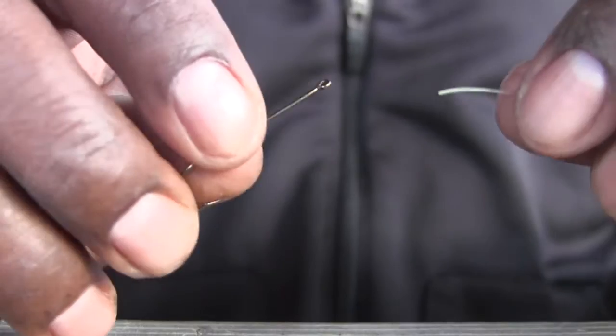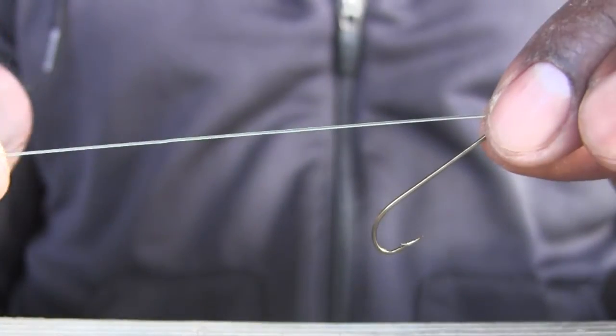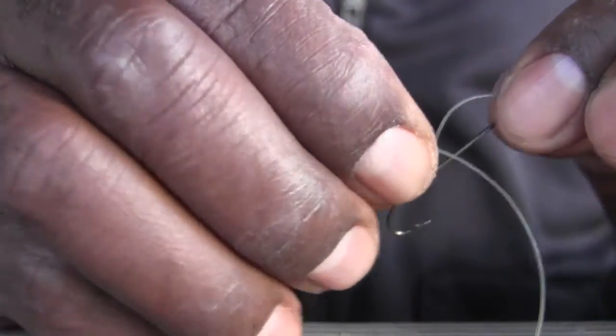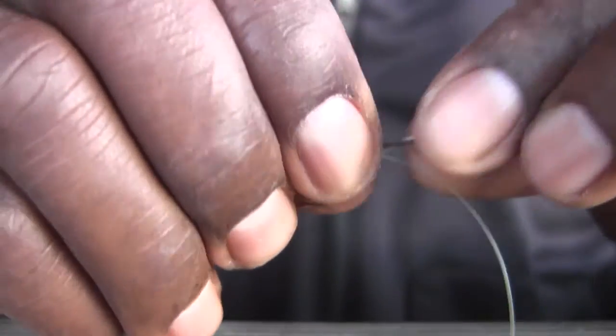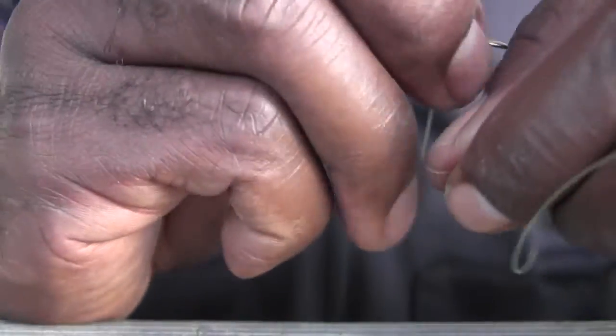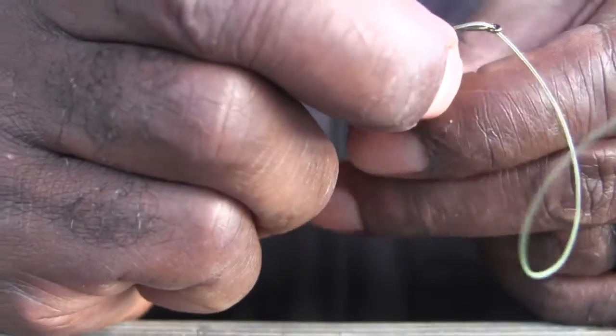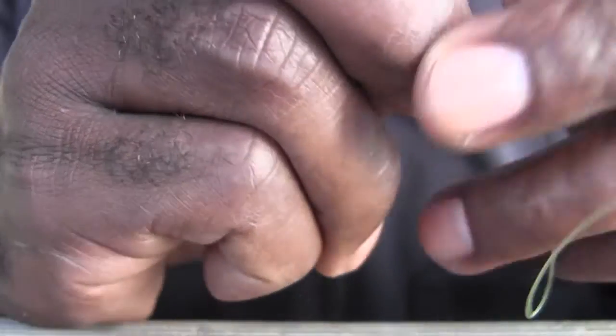Here we go. We're through the eye. Pulling some line through. Give us some line to work with. Making our little loop. Just like that. Now we're going to wrap. One. Two. Three. Four. Five.